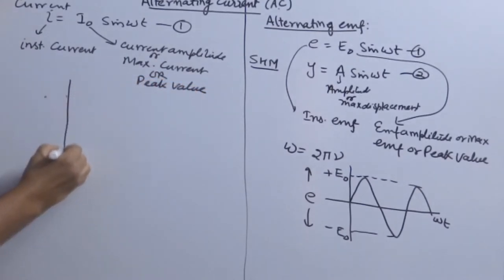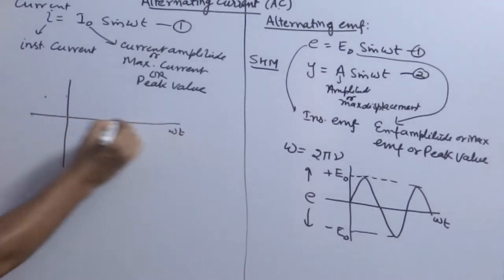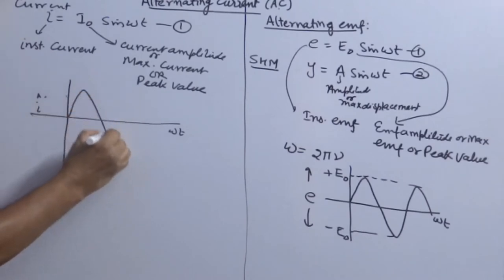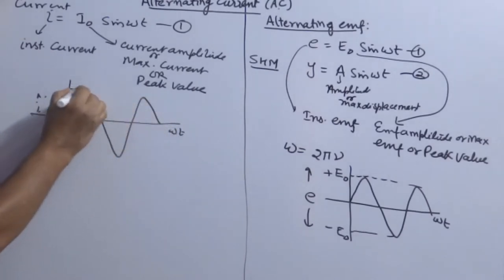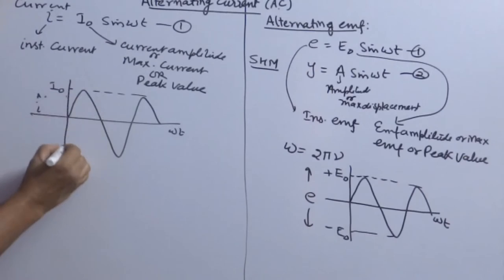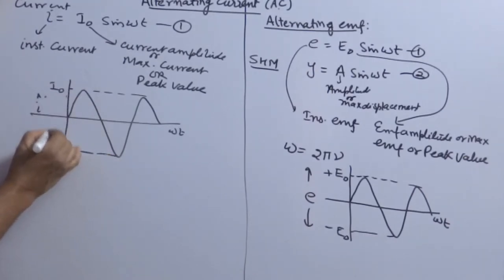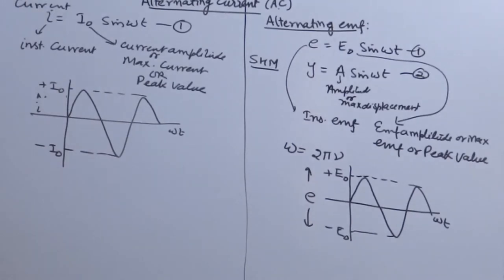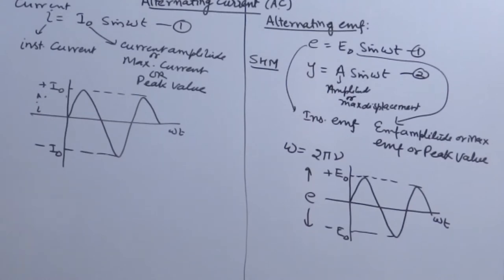If you plot a graph between I and ωt, it will be similar to the previous graph. All graphs are identical because values are changing according to the sinusoidal function. In this chapter, we are basically discussing the behavior of resistance-offering elements with AC in AC circuits, as well as the combination of elements in AC circuits.